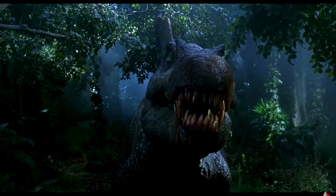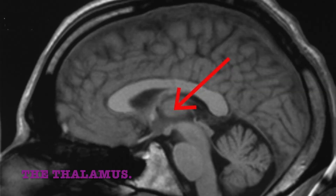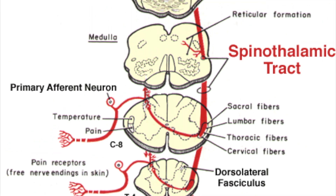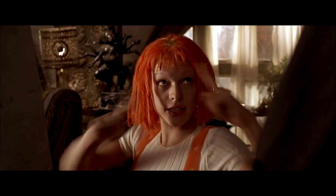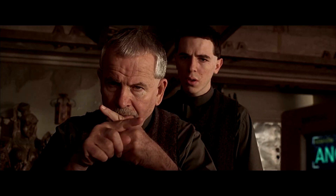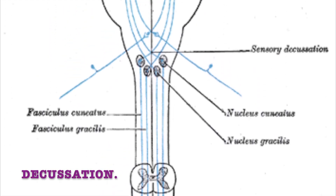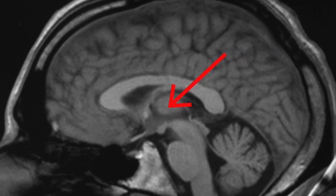The spinothalamic tract transmits neural impulses of pain and vibratory sense to the brain. As the name suggests, it goes from the spine to the thalamus. During the ascension of this ascending spinothalamic pathway, the bundle of neuron fibers will cross over to the opposite side at the level of the medulla. This process is called decussation.